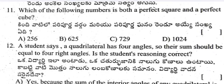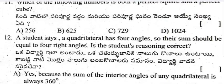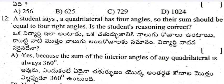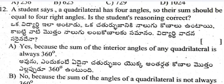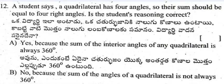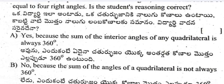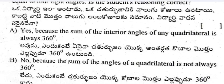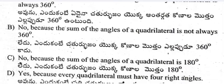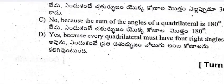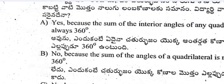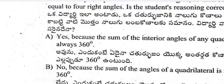Question 11: Which of the following numbers is both a perfect square and a perfect cube? One option is 729. Question 12: A student says a quadrilateral has four angles so their sum should equal four right angles — is the student's reasoning correct? Four options are given; select the correct one.